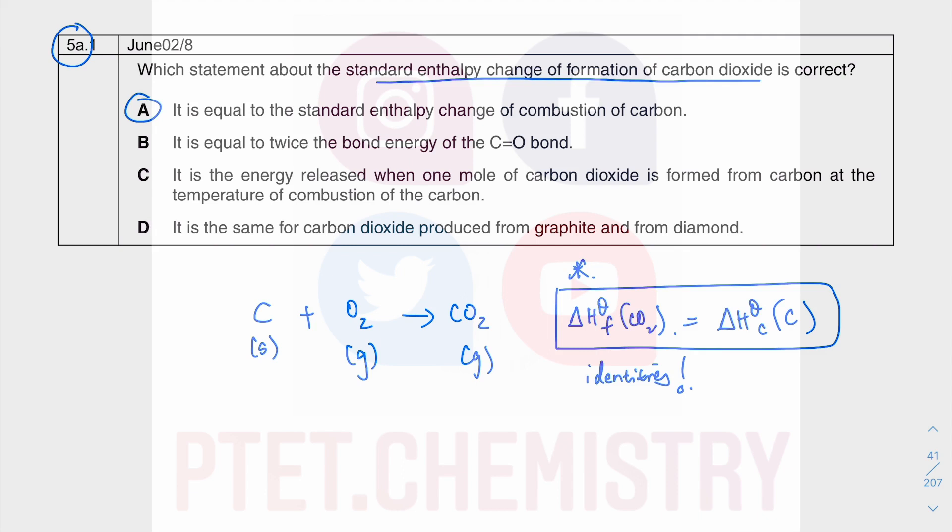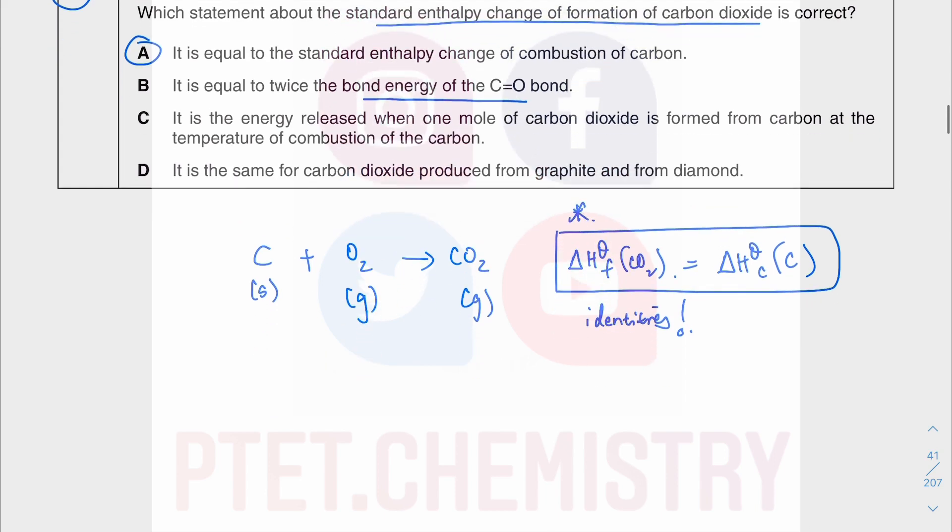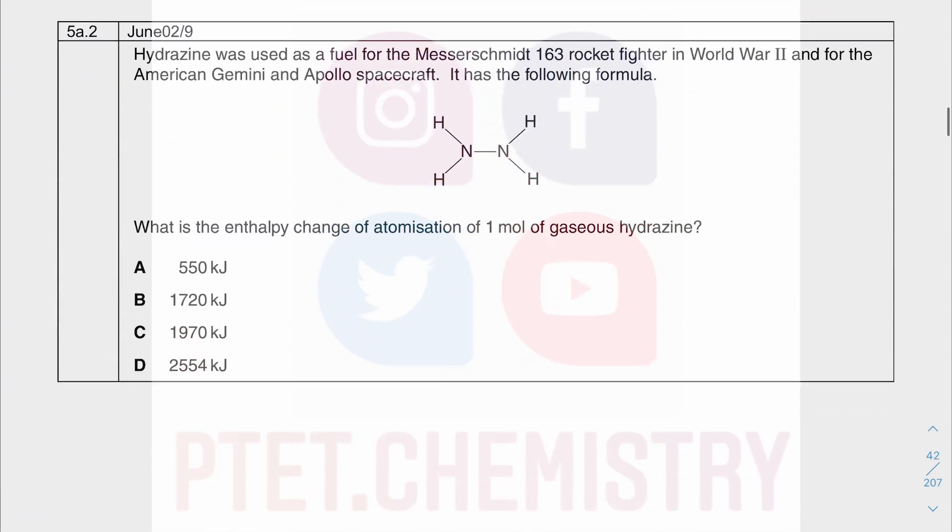It's got nothing to do with the bond energy of the CO bond because we can't use bond energy calculations because we still have a solid there. Bond energy can only be used to calculate enthalpy change when all the reactants and the products are in the gaseous state. Moving on to the next question.